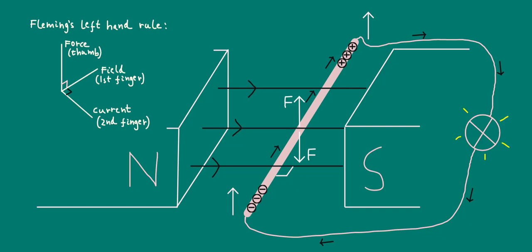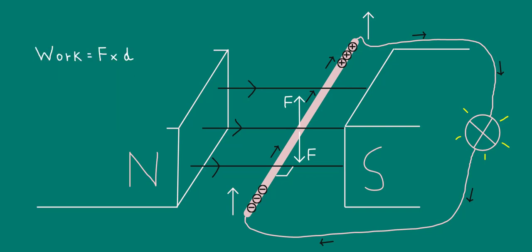Therefore, you'd be doing work on the wire, because you'd be applying a force over a distance. Remember, work equals force times distance, when the force acts parallel to the displacement of the object. And remember too, that work done in physics means a transfer of energy. This is how the energy puzzle is resolved.